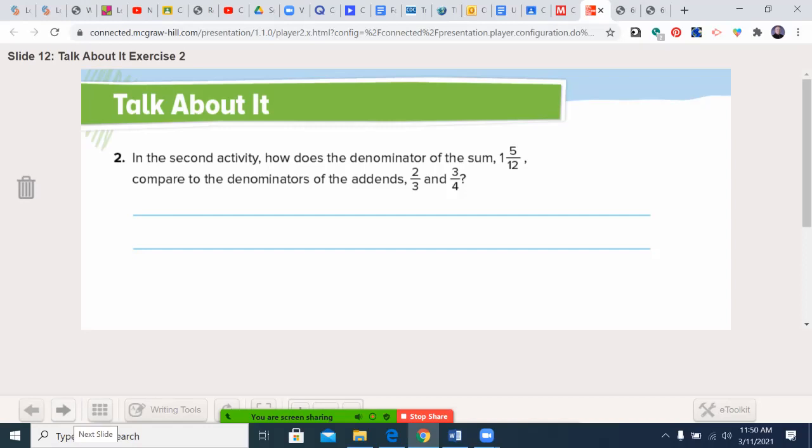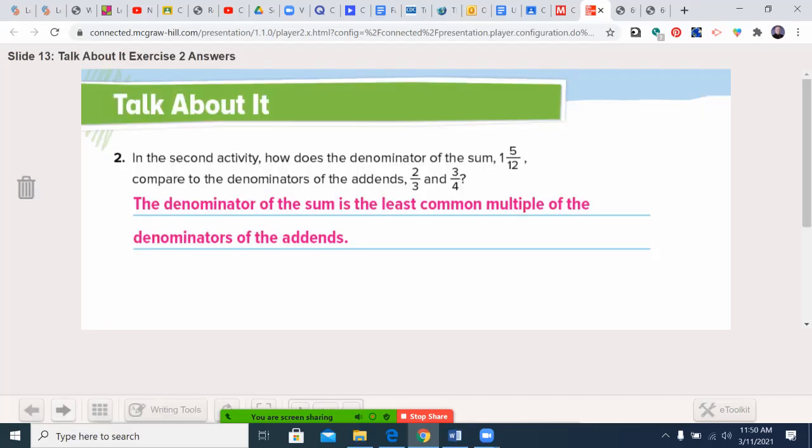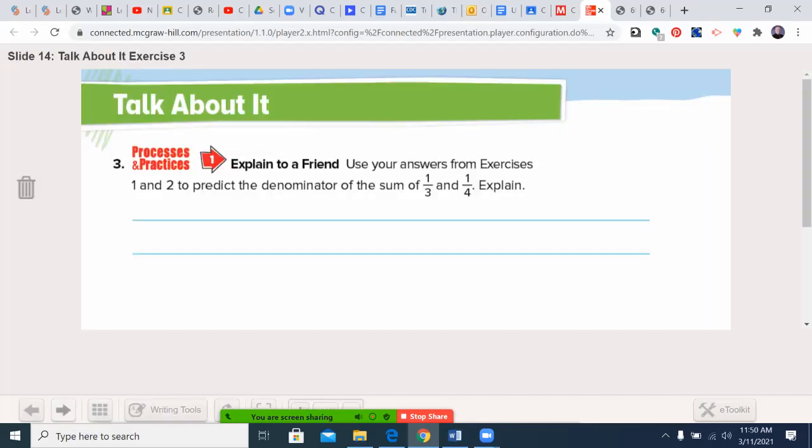So that is a quick way you could cheat and say, okay, three times four is twelve. Let's make these over twelve. You might sometimes have to simplify if there was a smaller least common multiple. The denominator of the sum of three and four? Well, it's going to be twelve, which we then start out, so that's going to be four-twelfths plus three-twelfths, which is seven-twelfths.